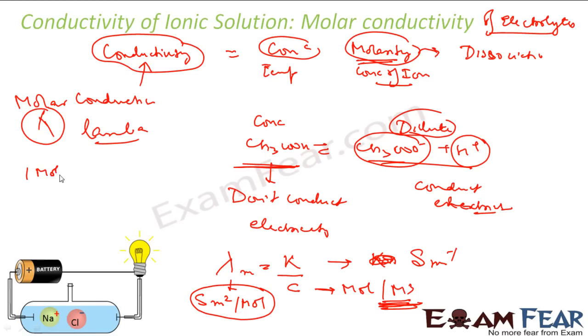One mole per meter cube is nothing but 1/1000 moles per liter. So if you have something in moles per liter, then you will divide by 1000 to get it in moles per meter cube. Similarly, one mole per centimeter cube is nothing but 1 by 1000 moles per liter, and moles per liter is my molarity actually.